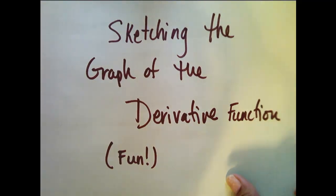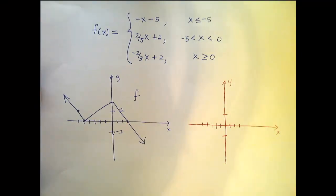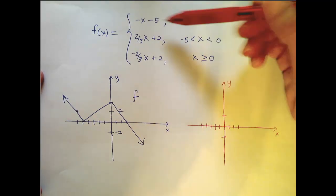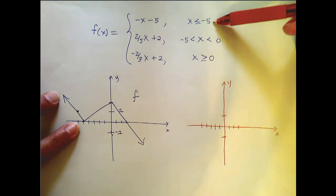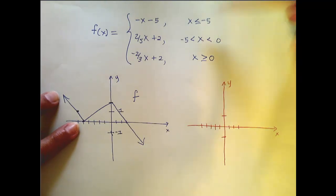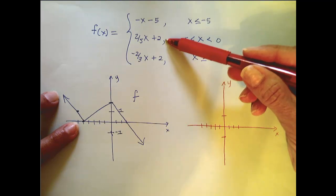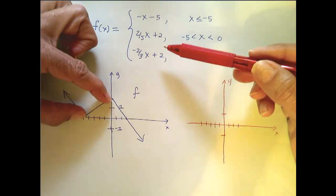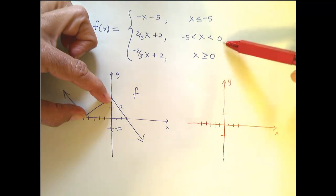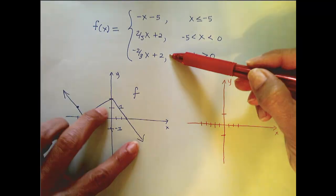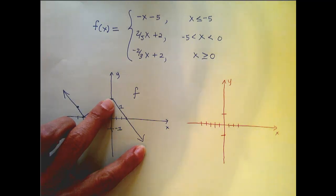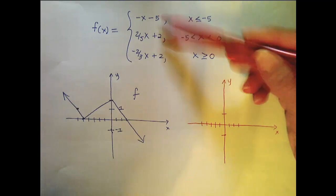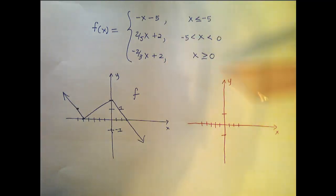We're going to start with a piecewise function. So f of x equals the line negative x minus 5 when x is less than or equal to negative 5. It's equal to the line 2 fifths x plus 2 when x is between negative 5 and 0. And it's equal to the line negative 2 thirds x plus 2 when x is bigger than or equal to 0. So it is a collection of lines on different parts of its domain.